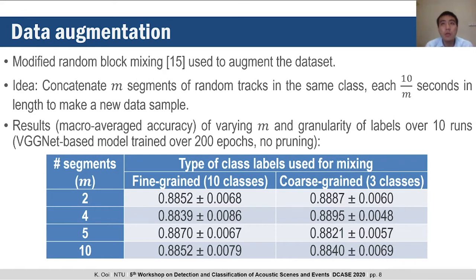This experiment, in the same way as the grid search for spectrogram parameters, was conducted with a VGGNet-based model trained over 200 epochs without any pruning. A cursory glance at the results table shows that there is almost no difference in mean macro-averaged accuracy for any of the tested schemes, and we confirmed this with a Friedman test on both m and the granularity as factors. As a result, we decided to use m equals 10 and mix by coarse-grained labels to maximize the variance of the augmented data samples.